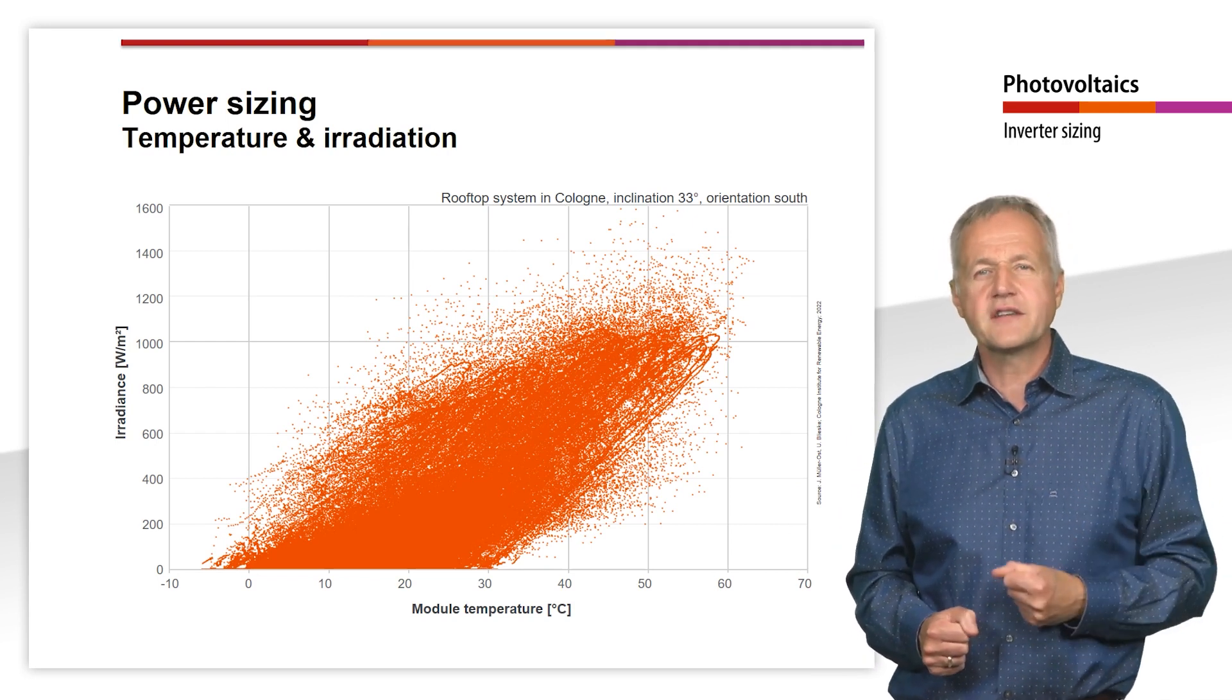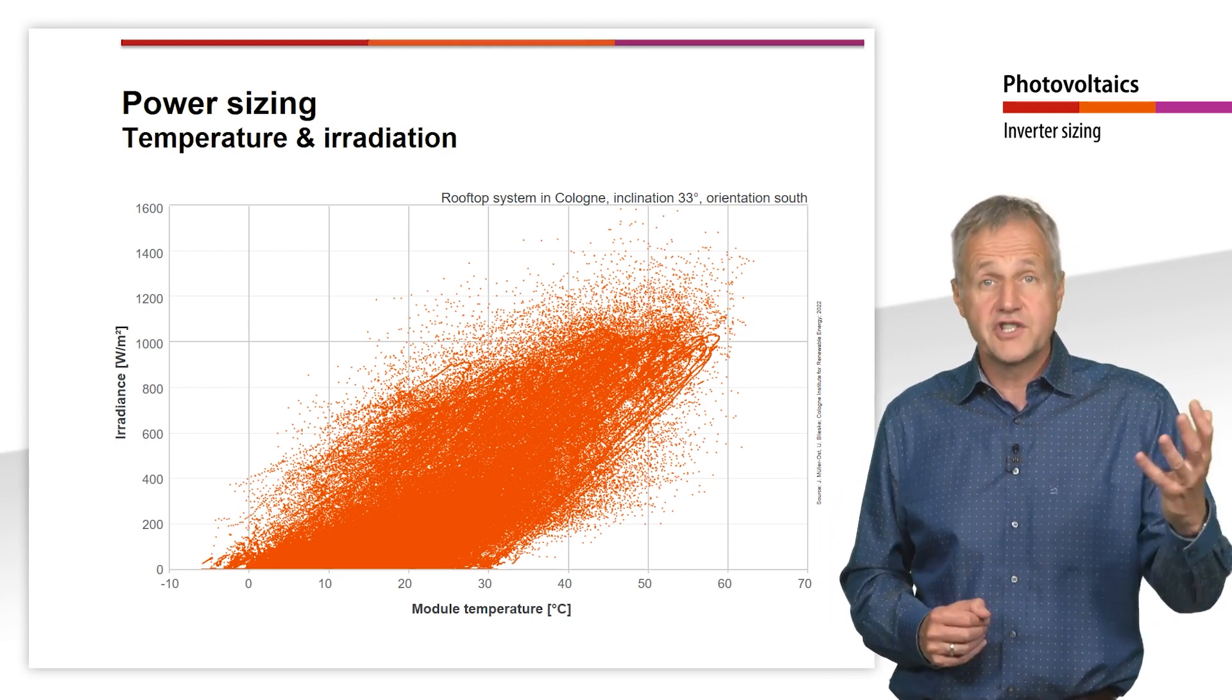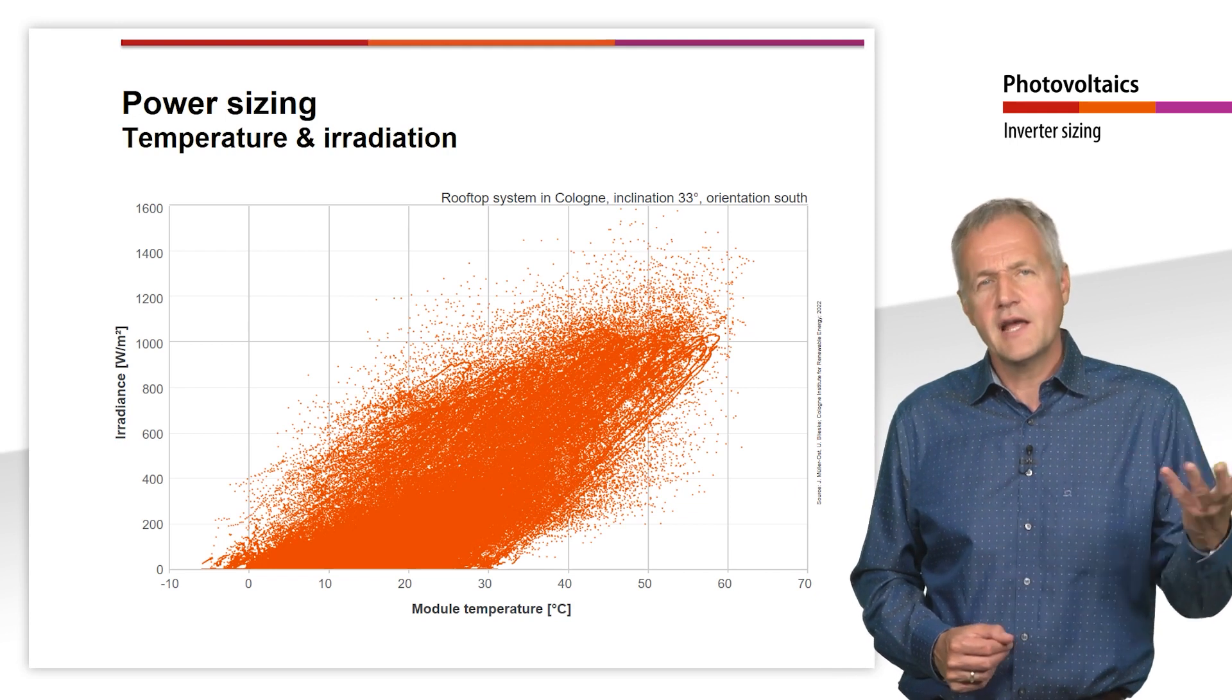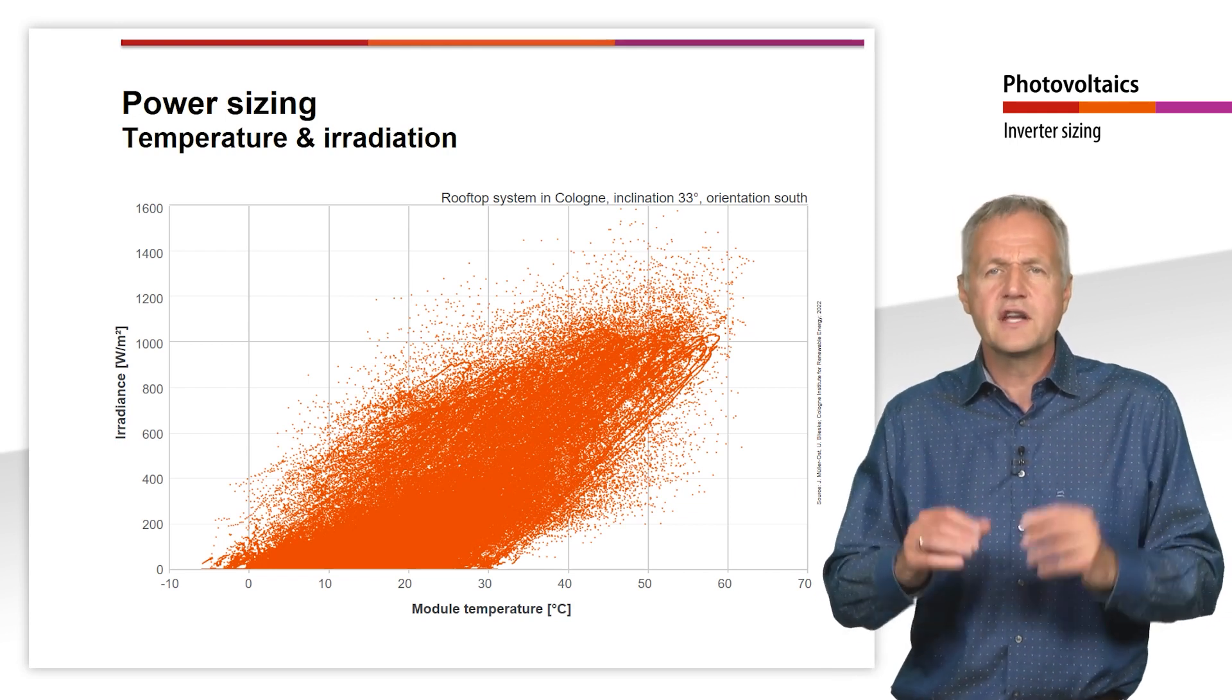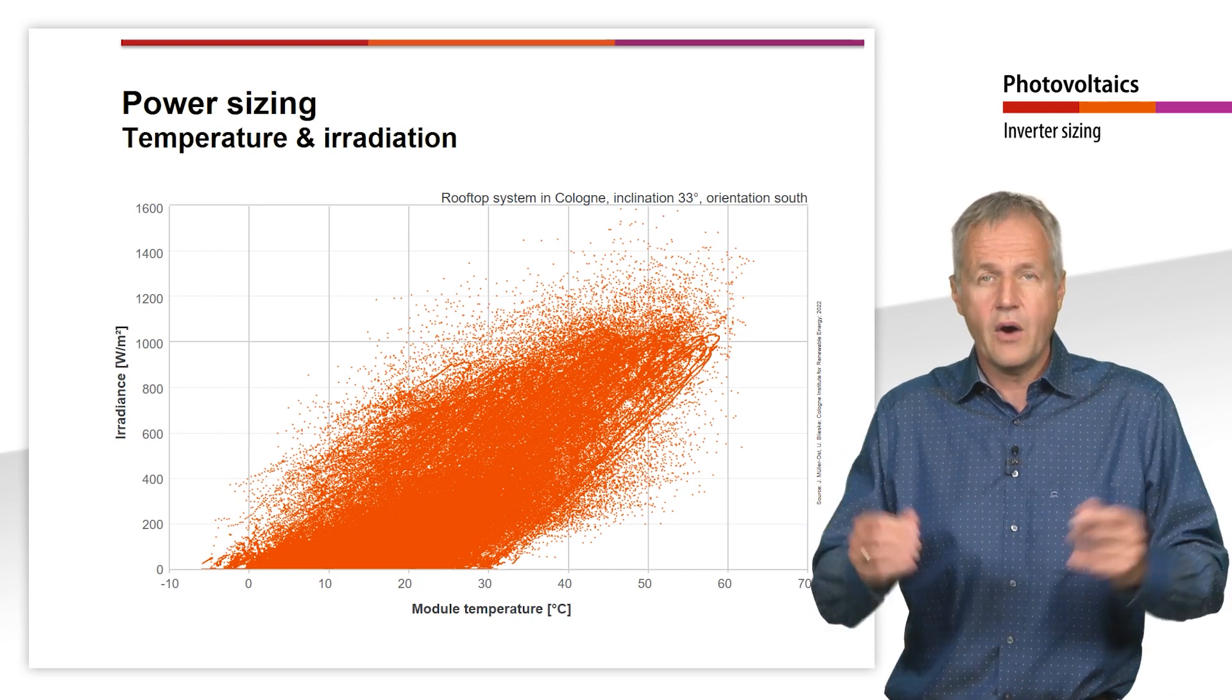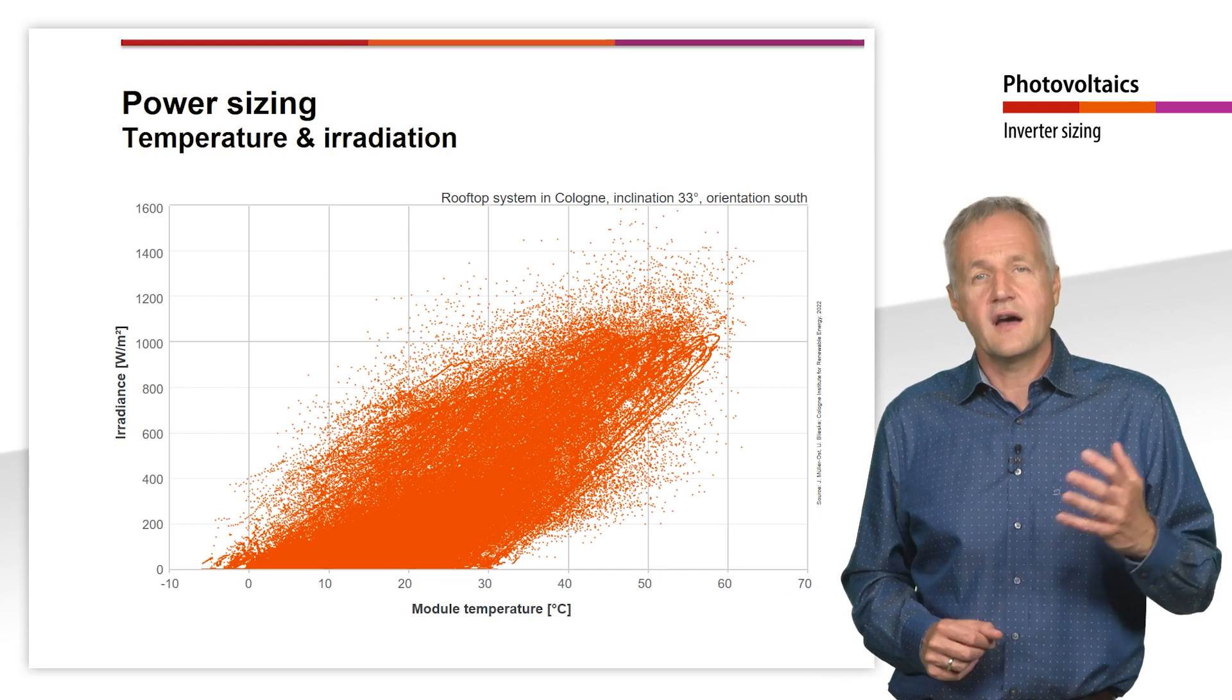However, in practice, it is common to size the inverter somewhat smaller than the solar generator. The reasons for this are mainly economic considerations. Since the cost of the inverter increases with its rated power, while the yield losses are very small if it is undersized.